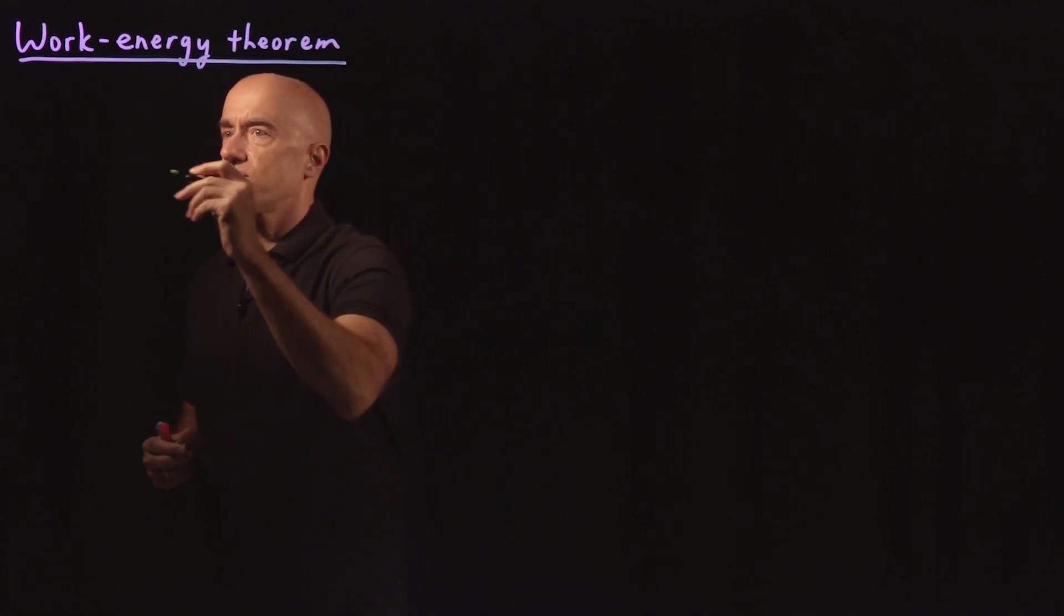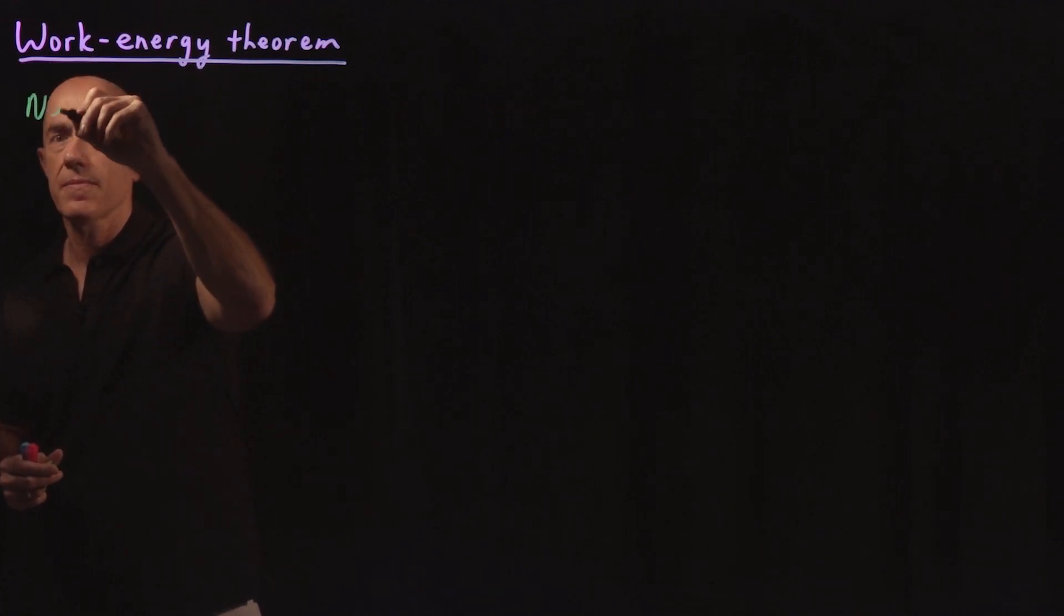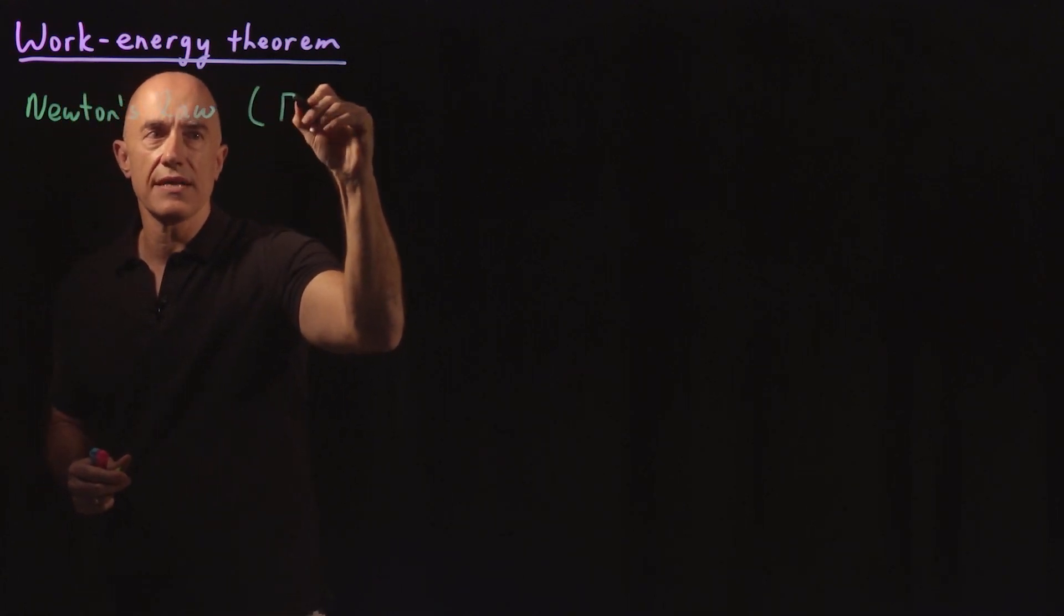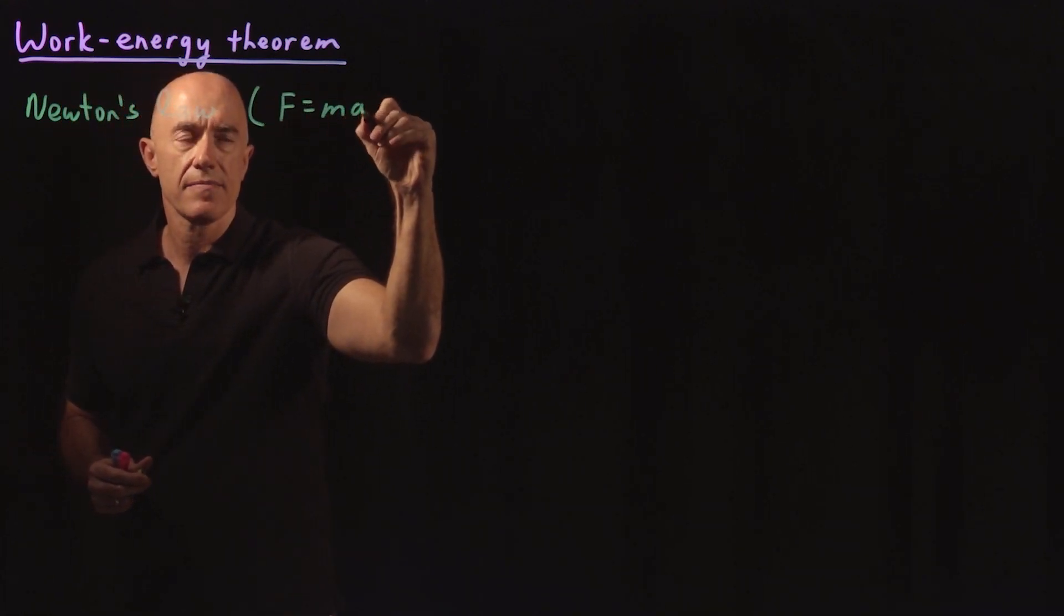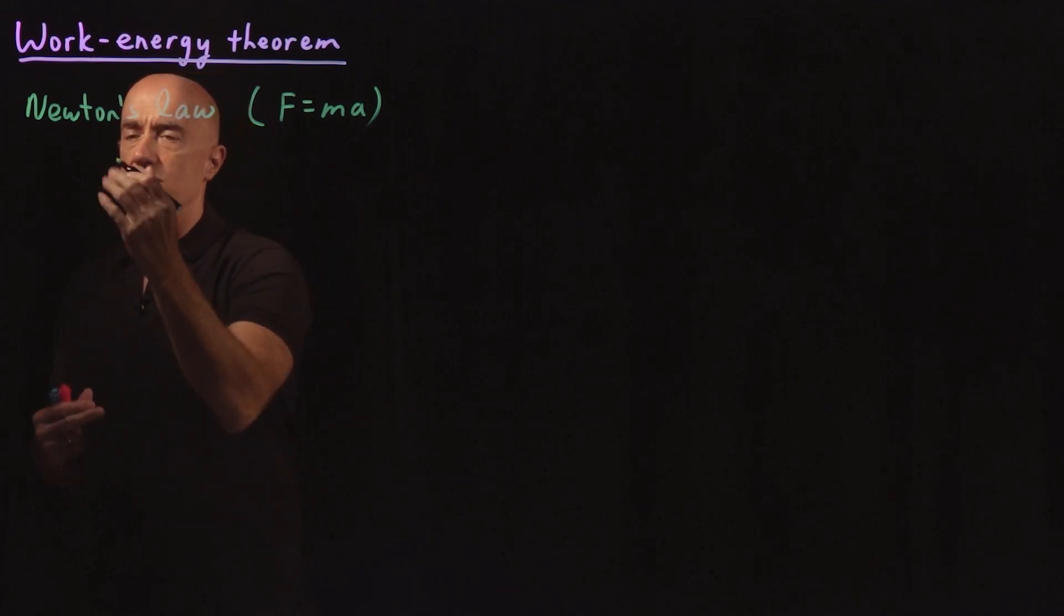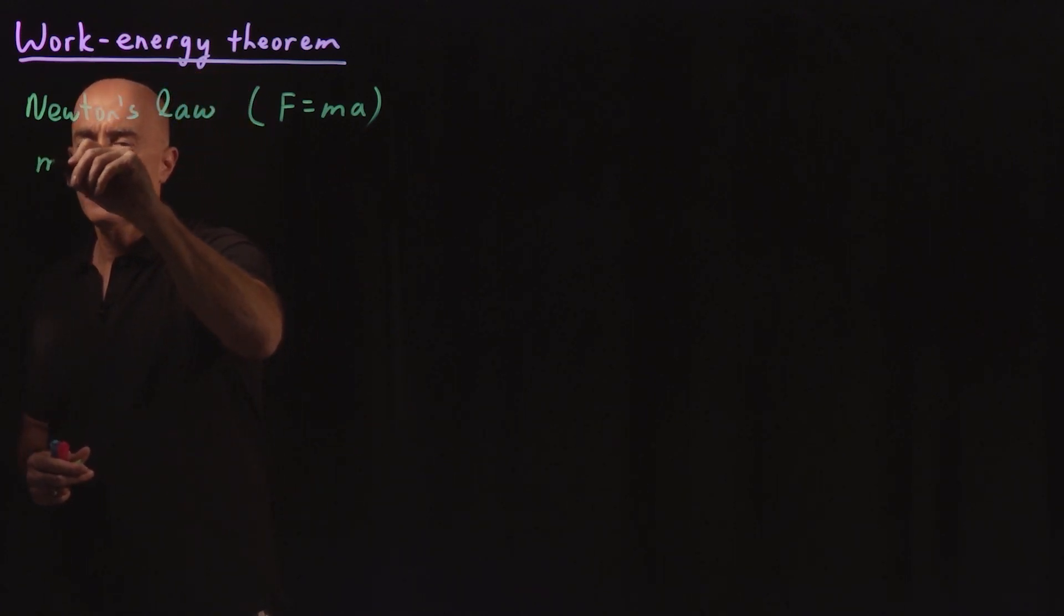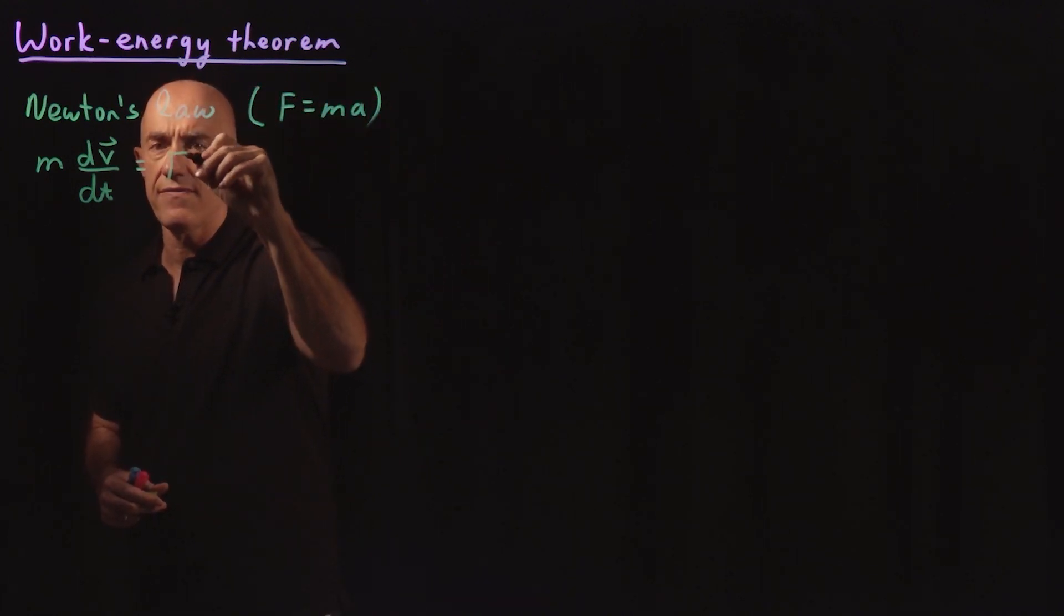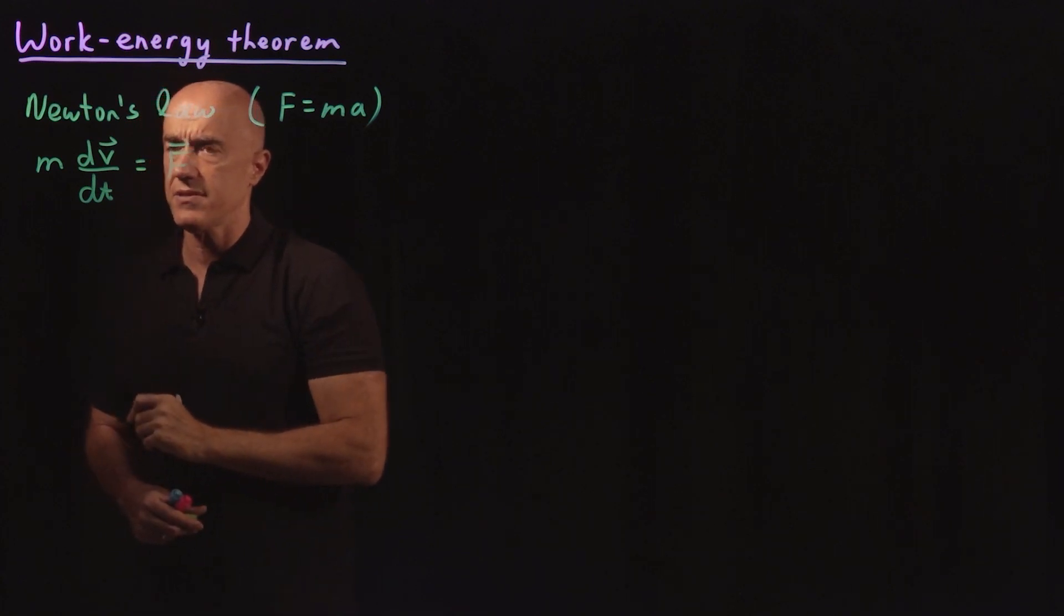So we're going to start with Newton's law, Newton's second law, that most of you know as F equals ma. If we write that in vector form, it's the mass of an object times its acceleration, which is the derivative of its velocity, which is a vector with respect to time. And that's equal to whatever the external force is.